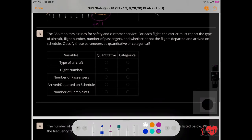Question number three. The FAA, Federal Aviation Agency, just controls all the airplanes, monitors airlines for safety and customer service. For each flight, the carrier must report the type of aircraft, flight number, number of passengers, and whether or not the flights departed and arrived on schedule. Classify these parameters as quantitative or categorical. Parameters is just another word for a sample. So if you went to LAX and they took a look at these airplanes that are landing. All right, so let's abbreviate. Categorical is 95% words, is your answer most of the time. There's sometimes also though they are numbers, but you don't take the average, or can't take - it doesn't make sense in the real world. And then quantitative is numbers that you can take the average or mean.